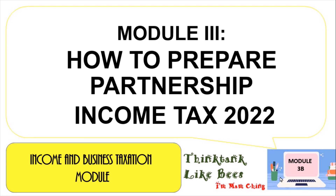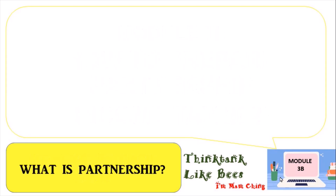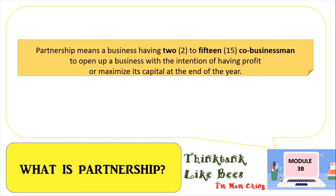Let's continue with Module 3. This time we are going to complete the partnership income tax for 2020. So what is a partnership? When we say partnership, it means a business having two to fifteen co-businessmen opening up a business with the intention of having profit or maximizing its capital at the end of the year.